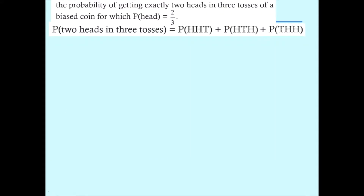Let's have a look at an example. Find the probability of getting exactly two heads in three tosses of a biased coin. Normally we've got a 50-50 probability, but here we've got a coin which is biased, so the probability of getting a head is two-thirds. We want to find the probability of getting two heads in three tosses.